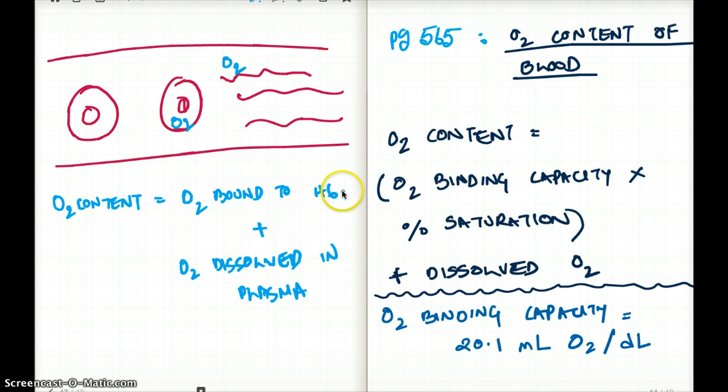Now how can we measure? Well, it's easy to measure oxygen dissolved in plasma, which is really this equation right here. Oxygen content is this thing times this plus dissolved oxygen. So that is easy to measure.